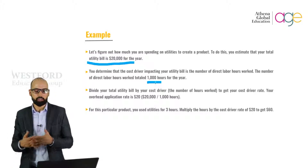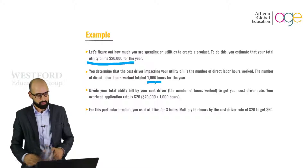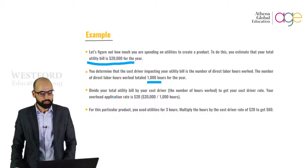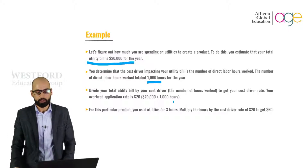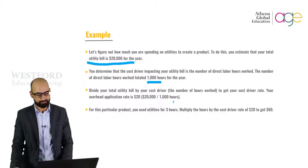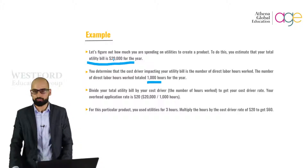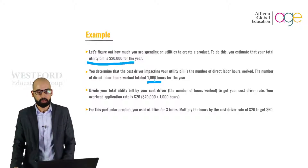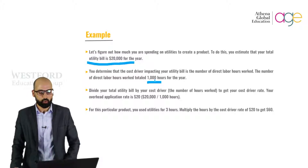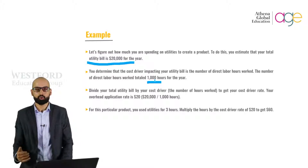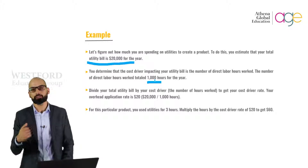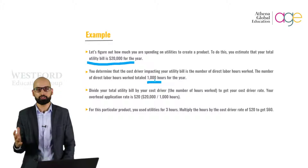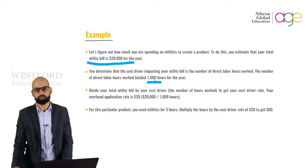The 1,000 labor hours have contributed to the utility bill of $20,000. You divide your utility bill by your cost driver — labor hours — to get your cost driver rate. The cost driver rate is $20,000 divided by 1,000 hours, which equals $20 per hour. This is your utility cost per hour.